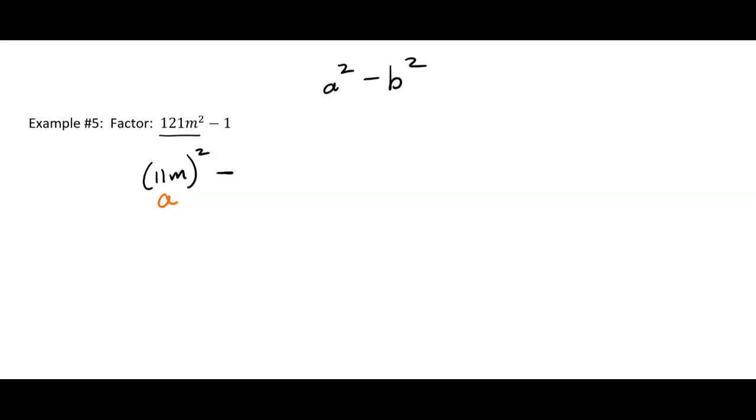Now it does have to be subtraction, so it's called the difference of squares. Sometimes I'll try to fool you and throw a plus in, but it has to be subtraction. And then the last term, that has to be written as a square as well. But we can write 1 as 1 squared. So my b is going to be 1.